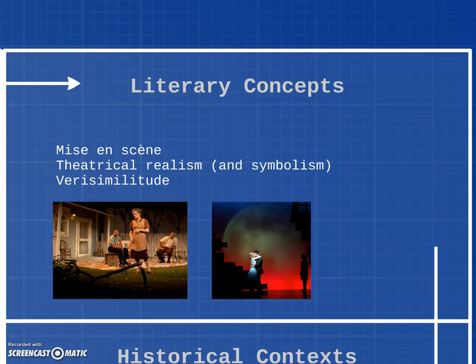Verisimilitude is the representational goal of realistic theater — it simply means true-seeming. Realistic theater wants to put you in a place you'll recognize, like someone's living room, and let you forget, to the extent that you can, that you're watching a play. The social goal of realism was to use the five senses and a scientific approach to reality to solve serious human problems.